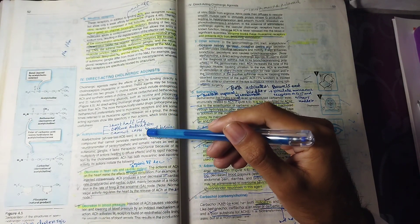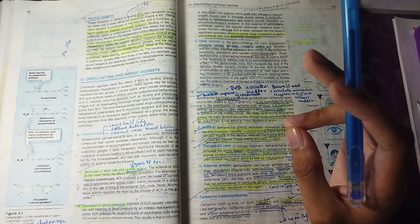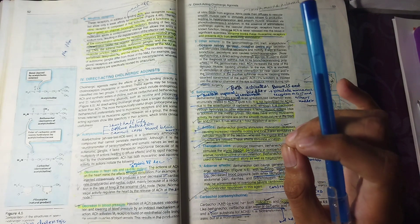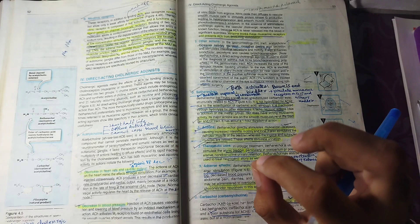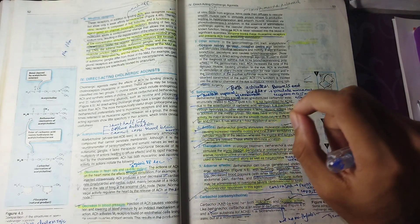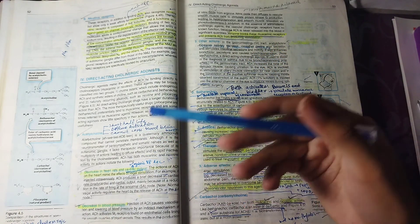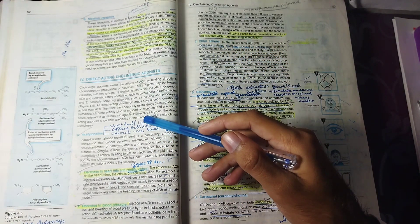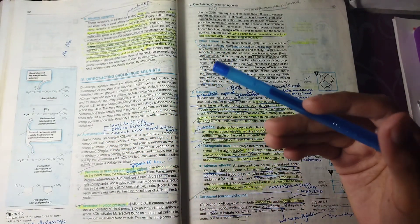Although acetylcholine is the neurotransmitter in parasympathetic, somatic nerves, and autonomic ganglia, we do not use it as a drug. It has two reasons: diffuse activation - it activates all receptors with no specificity - and very short duration of action. The half-life is very short because cholinesterase enzymes break it down very fast.